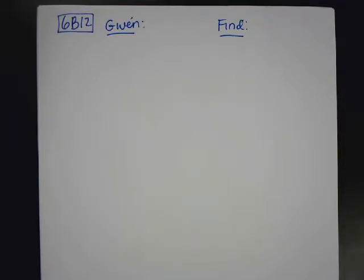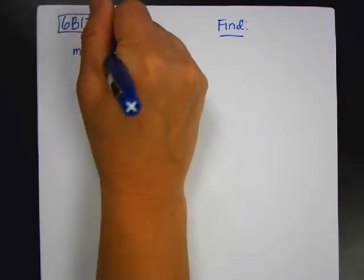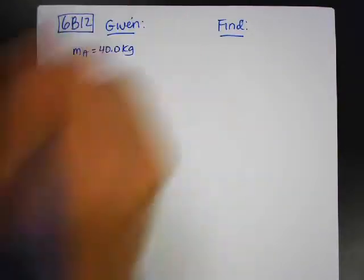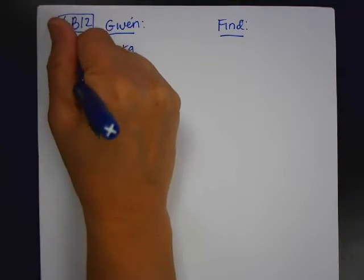So it says a 40 kilogram projectile, so I'm going to call that m_A, leaves a 2.00 times 10^3 kilogram launcher, so I'm going to call that one m_B.